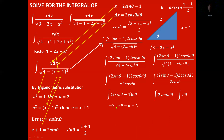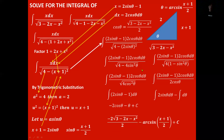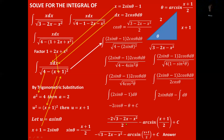Now we substitute back. Replacing cos theta with the square root of 3 minus 2x minus x squared all over 2, and theta with arcsin of x plus 1 all over 2, we get negative 2 times that square root over 2 minus arcsin of x plus 1 over 2 plus C. The 2s cancel, giving our final answer: negative square root of 3 minus 2x minus x squared, minus arcsin of x plus 1 all over 2, plus C.